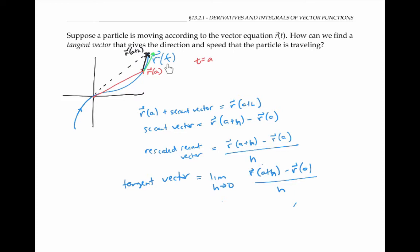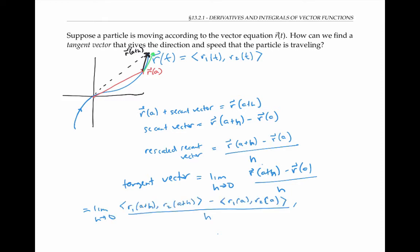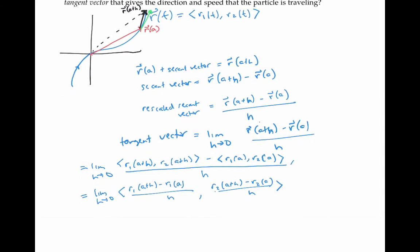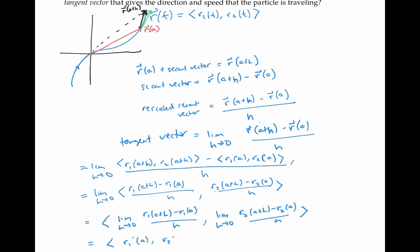Now if we write our original r of t in components, then we can write out our limit in terms of components and rewrite a little bit. Taking the limit of a vector is the same thing as taking the limit of each component separately, which just gives us our familiar calculus one derivatives for each component. Therefore, the tangent vector at t equals a can just be found by taking the derivatives of each component at t equals a separately. This holds for vectors in three or more dimensions as well. This quantity is called r prime of a and is also called the derivative of r of t at t equals a.